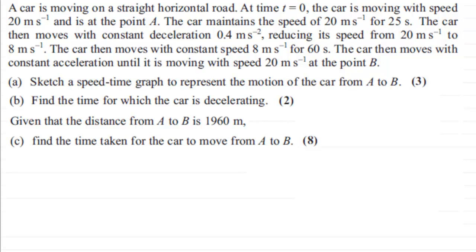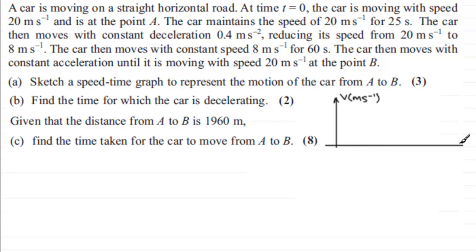Welcome back. First of all, we've got to sketch a speed-time graph to represent the motion of the car moving from A to B. I would want to set up my axes: we've got the vertical axis which represents the speed — I'm going to call it V and write that in meters per second. Always label your axes. Then we've got the horizontal axis which represents time t, measured in seconds.